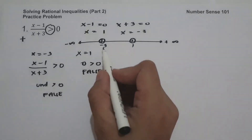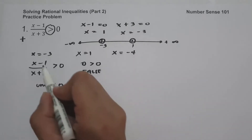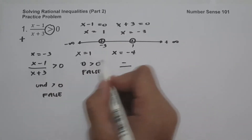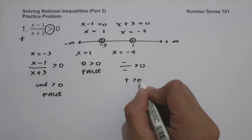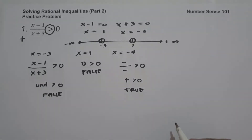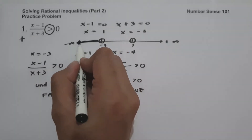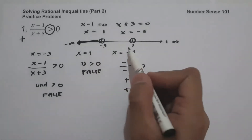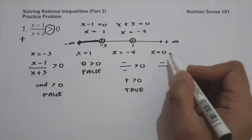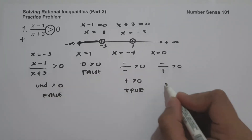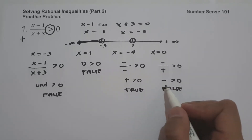Let us have a number less than negative 3. Let's say x equals negative 4. Negative 4 minus 1 is negative, and negative 4 plus 3 is negative, greater than 0. Negative divided by negative is positive, greater than 0 — so this is true. I'm going to shade this part to indicate this region is included in our solution. Now let's test a number between negative 3 and 1, say x equals 0. We have 0 minus 1 is negative, and 0 plus 3 is positive, giving negative greater than 0 — so this is false, because all negative numbers are less than 0.